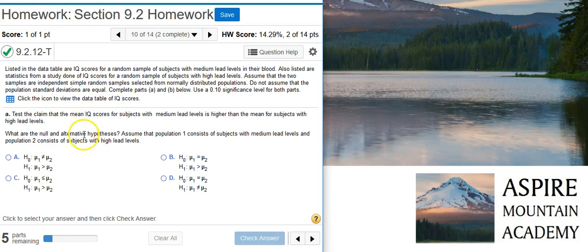Part A asks us to test the claim that the mean IQ scores for subjects with medium lead levels is higher than the mean for subjects with high lead levels. The first thing we're asked to do is provide the null and alternative hypotheses. We're also instructed to assume that population 1 consists of subjects with medium lead levels and population 2 consists of subjects with high lead levels.